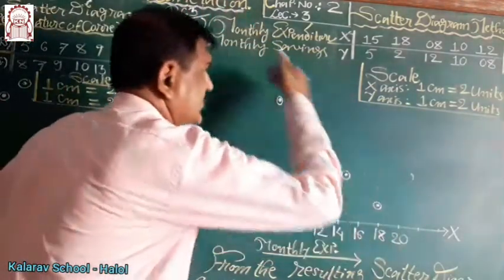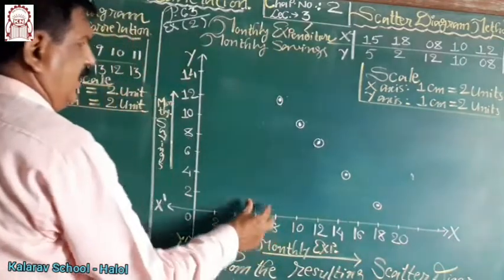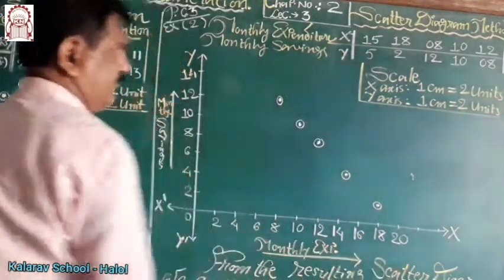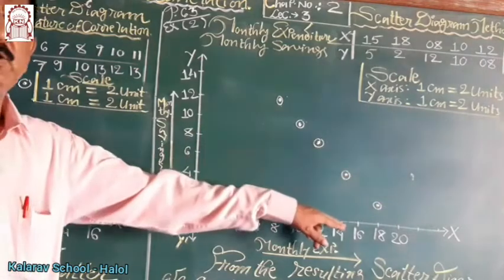Points are scattered in a straight line manner, downward, from upper left corner to the lower right corner.